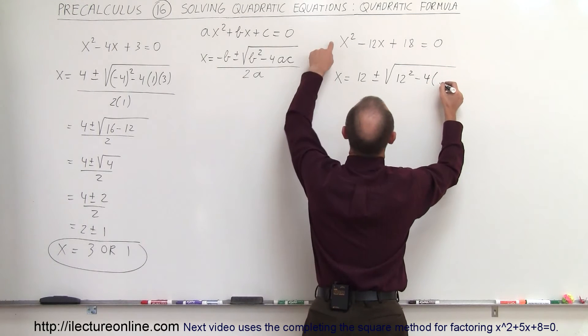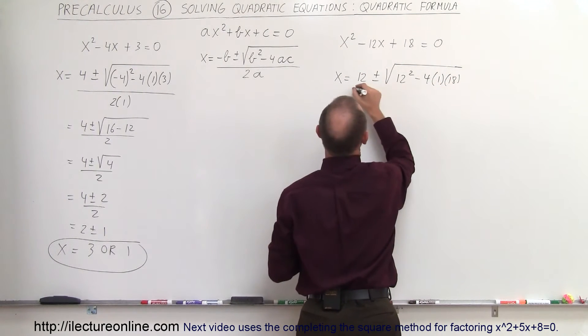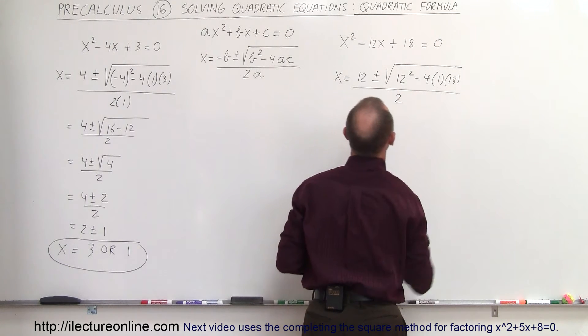Minus 4 times a, which is 1, times c, which is 18. And the whole thing is divided by 2 times a, which is 2.